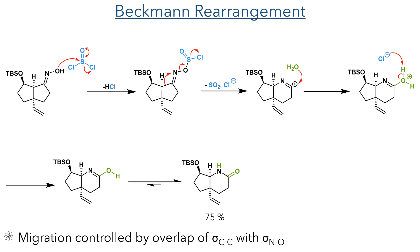In the next step, this was reacted with tosyl chloride to carry out a Beckmann rearrangement. The hydroxyl group attacks the sulphur to displace the chloride and this activates the oxygen atom towards elimination. The HOMO of the carbon-carbon bond can overlap with the LUMO of the N-O bond and this allows a migration to occur, eliminating chloride and sulphur dioxide. This forms a six-membered nitrogen-containing ring with a cationic sp2 centre. This is attacked by water and chloride then acts as a base to deprotonate it, forming an imidic acid that rapidly tautomerises to the more stable lactam in a 75% yield.